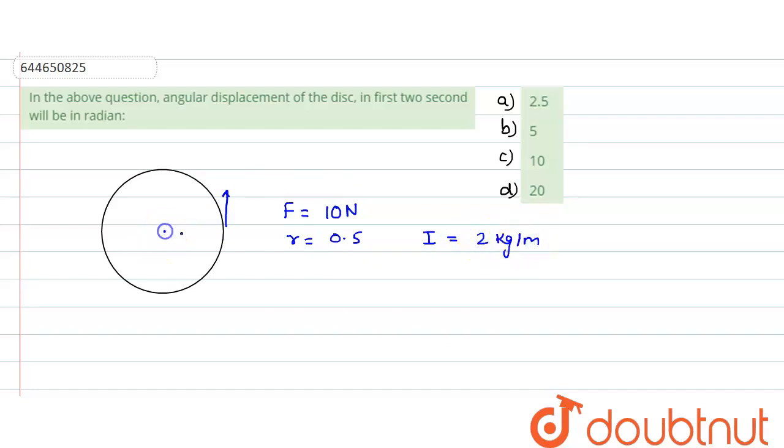So it was rotated. Now what we need to find? We need to find, and also it was given that initial angular velocity ω₀ was given as 0. Now we need to find in the first two seconds what is the angular displacement.